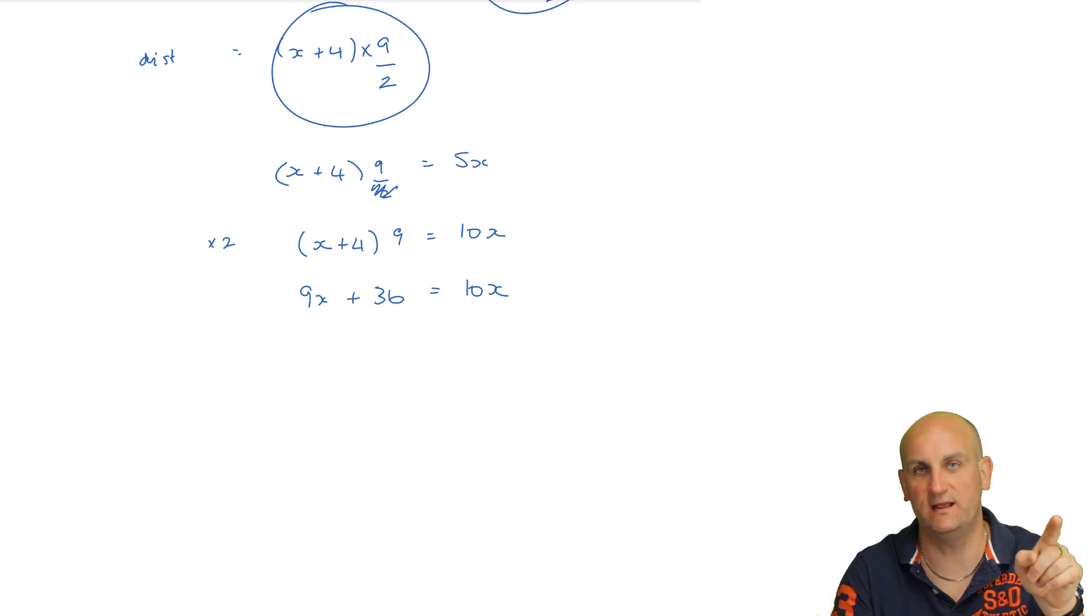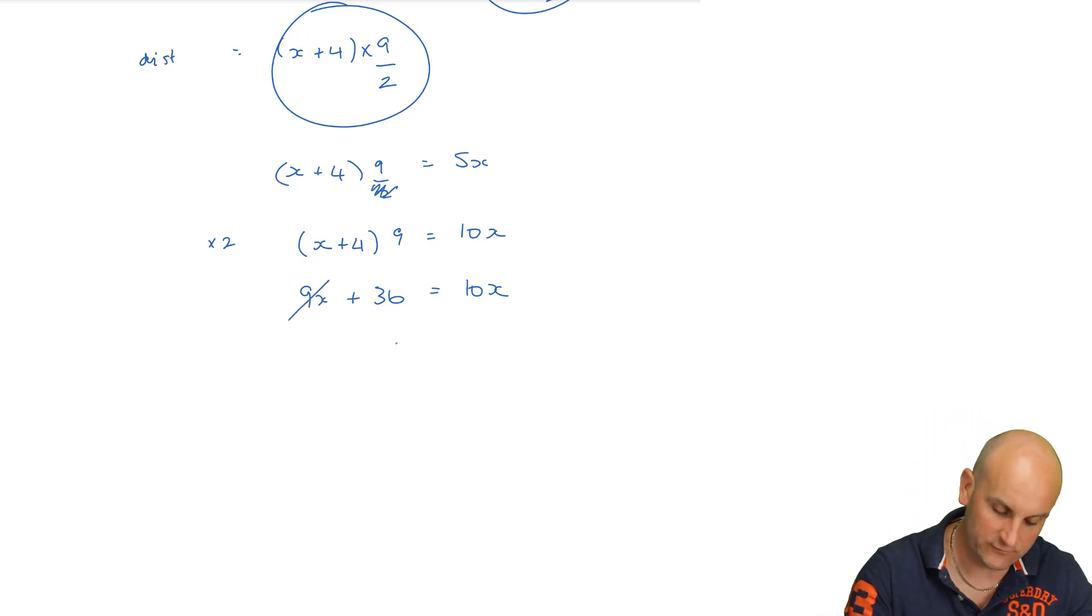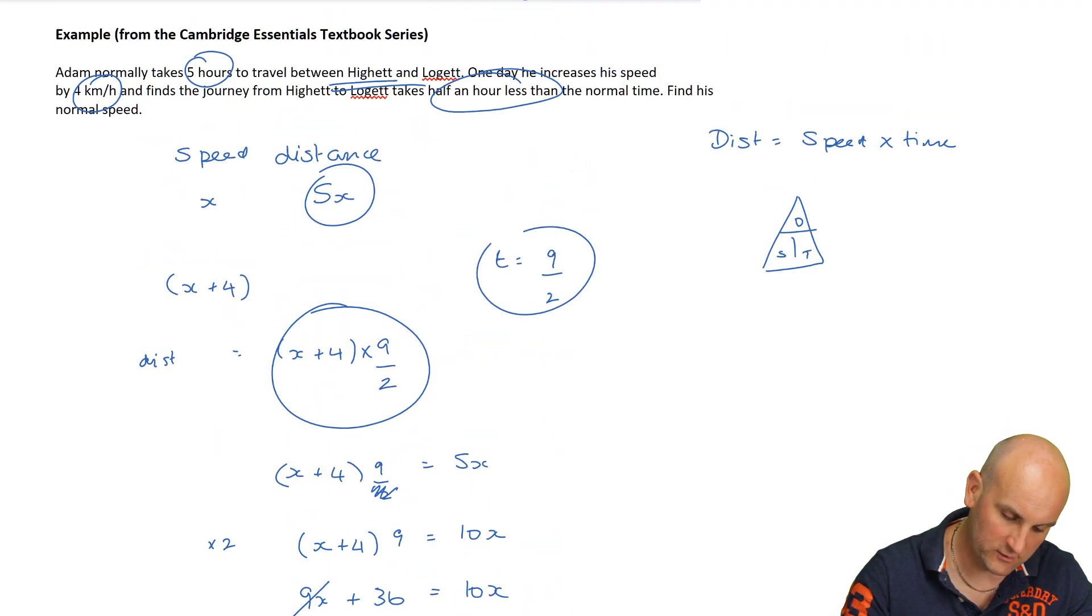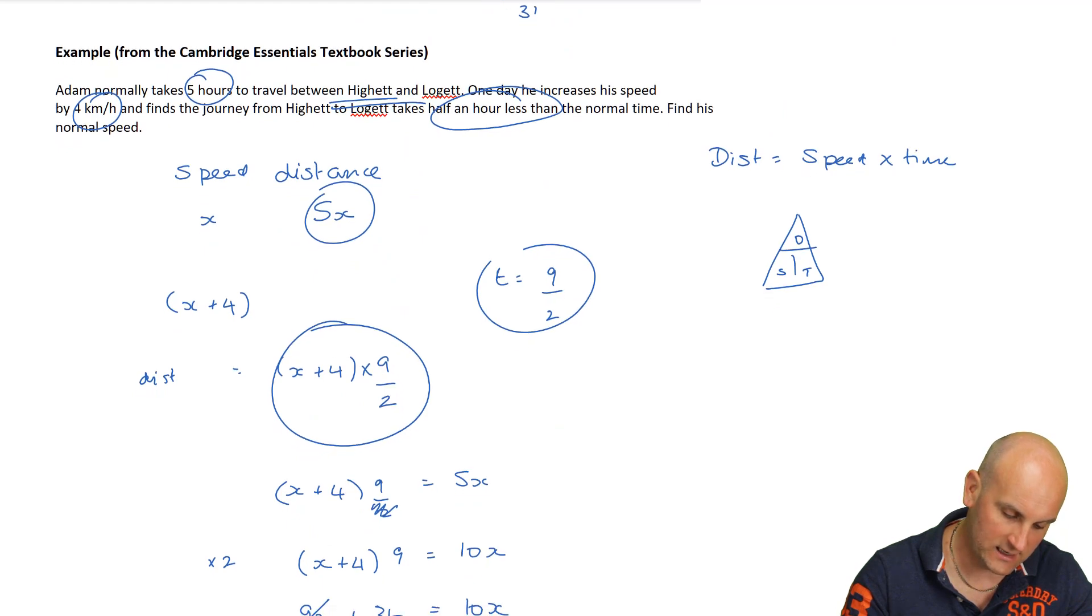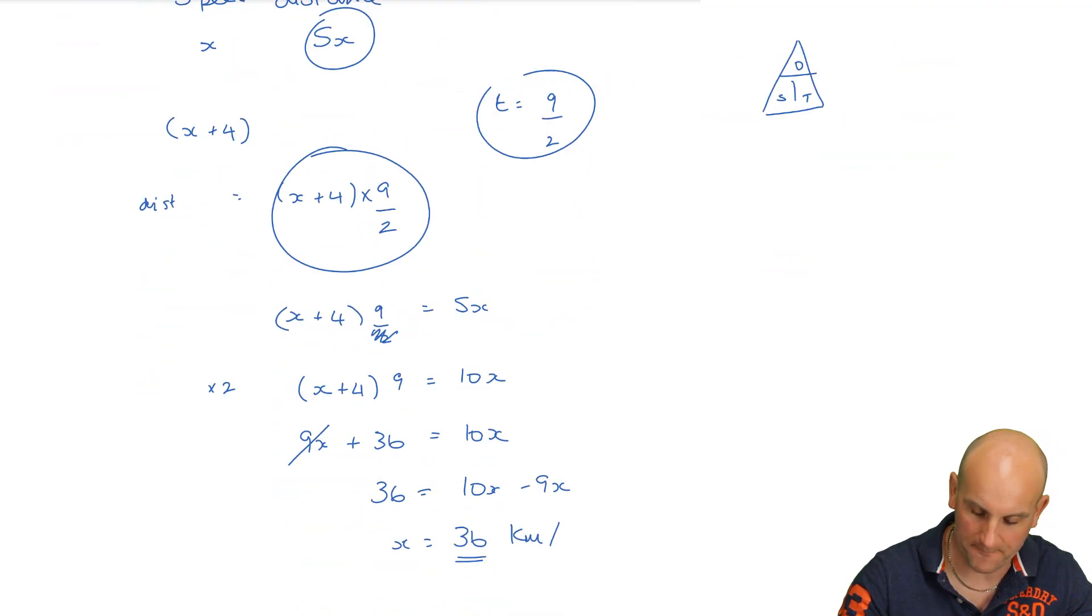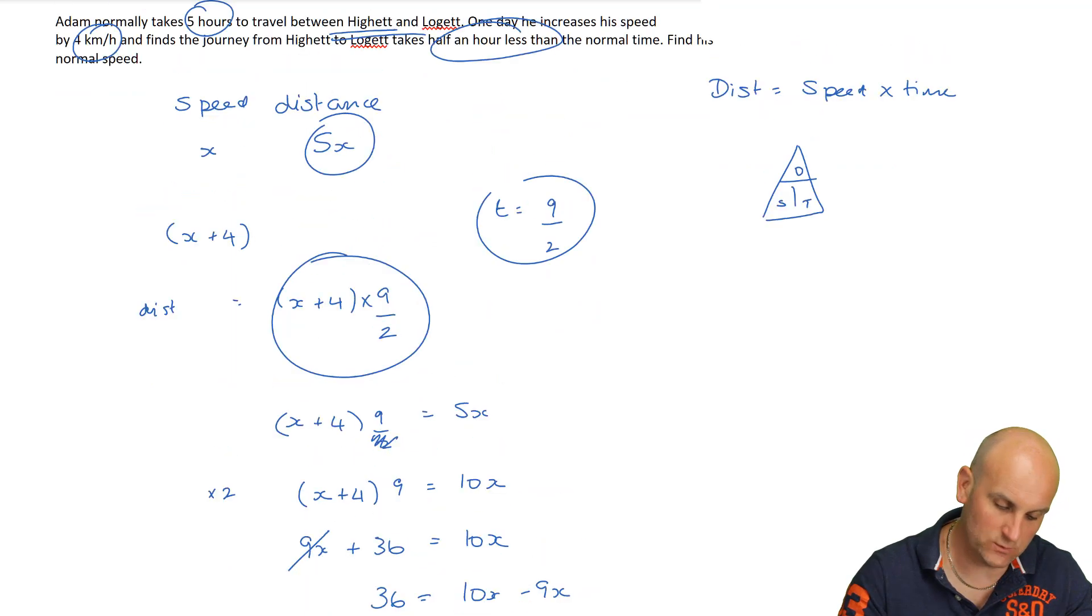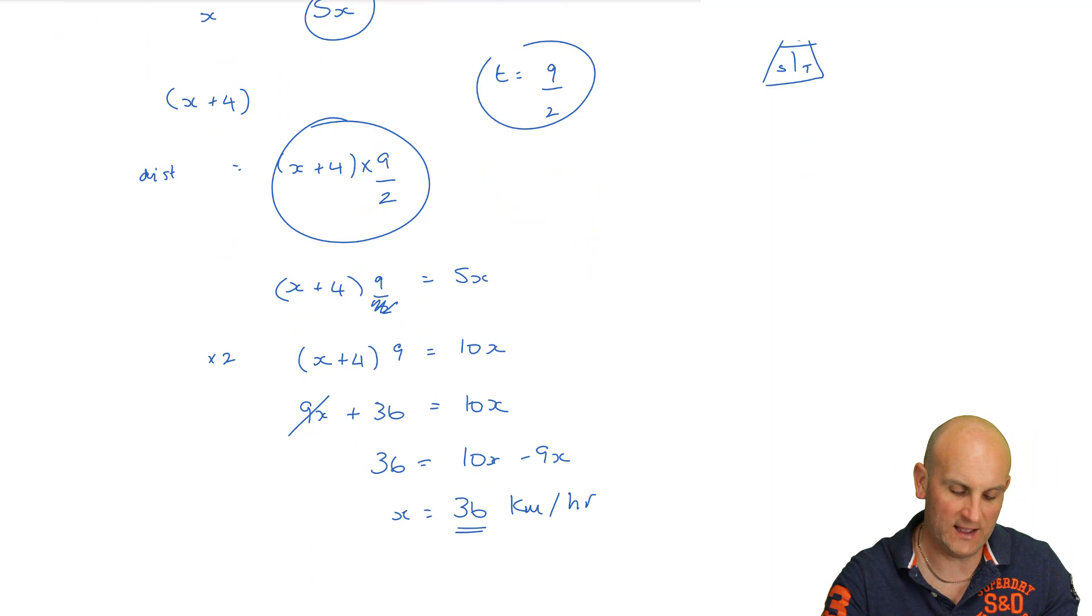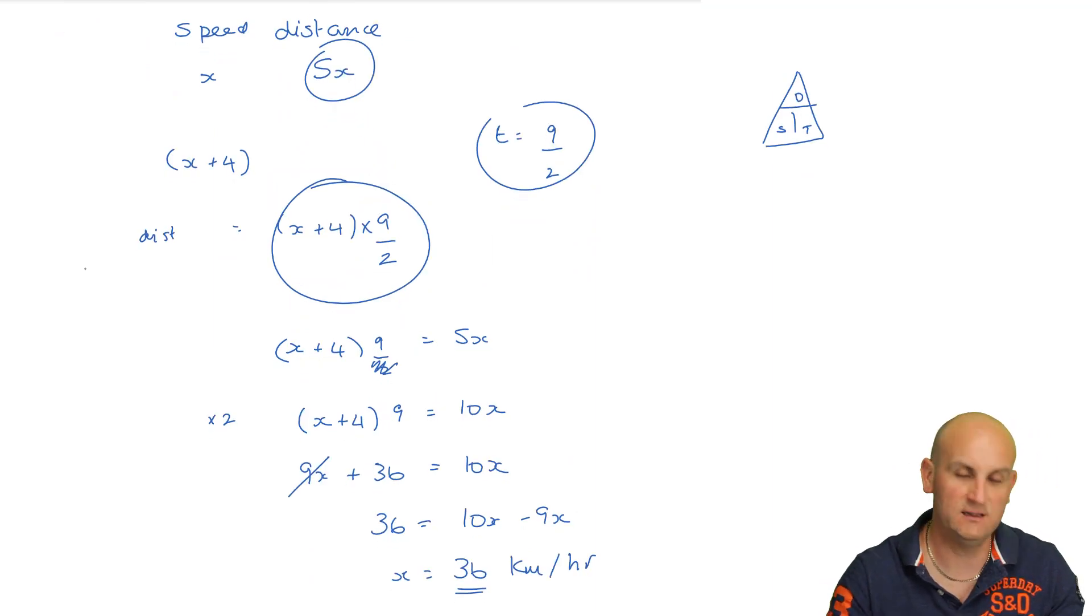Multiply these out gives me 9X plus 36 equals 10X. I've got 10X's on the left hand side and 9X's on the right hand side. So I'm going to subtract 9X's from both sides, which gives me 10X minus 9X. So X equals 36. Now 36 what? I've got to make sure I get my units right. Kilometers per hour. So the question is find his normal speed: 36 kilometers per hour. The working out here isn't necessarily the best. It's more mathematical doodling.